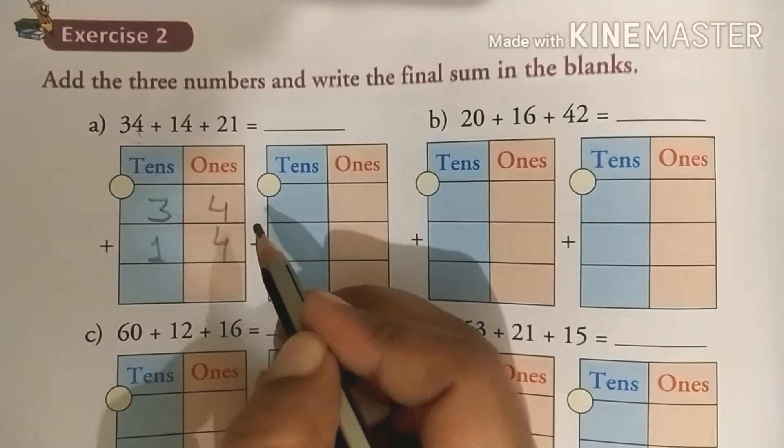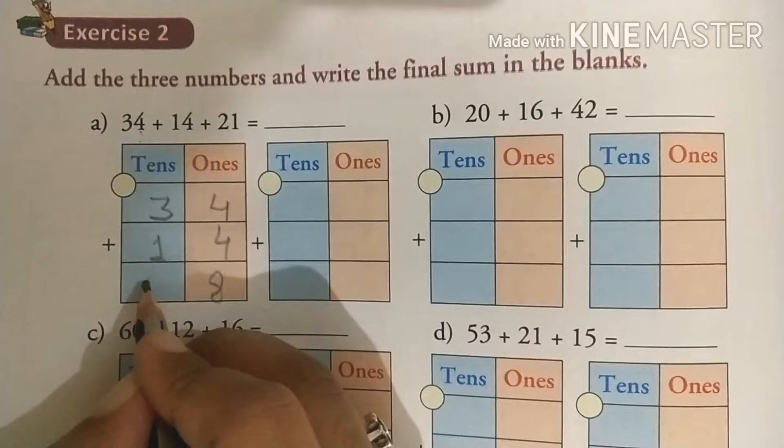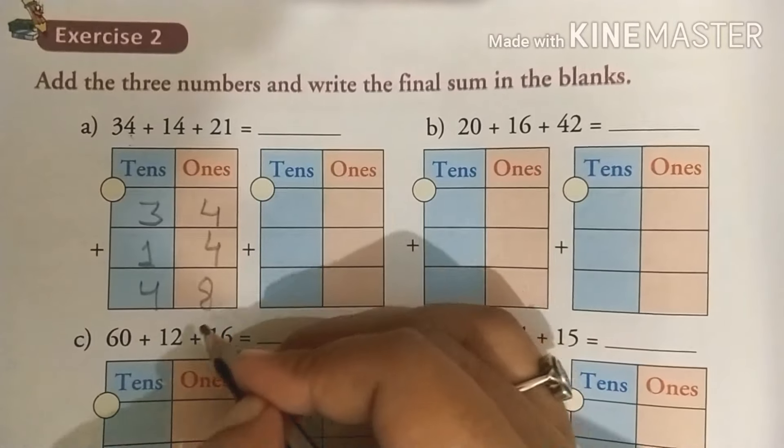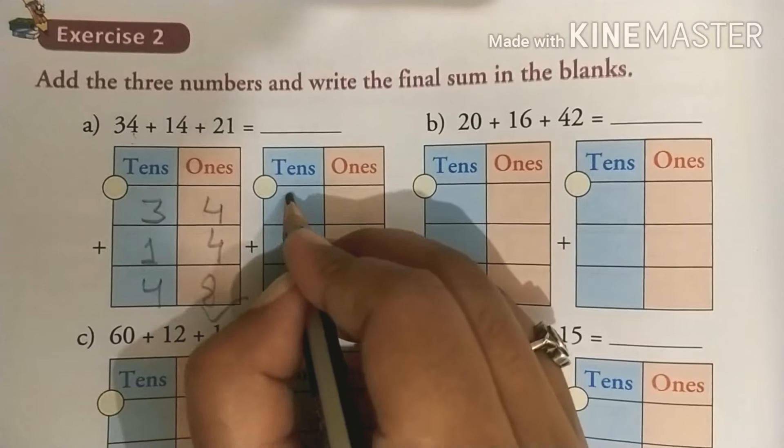Jab aap isko add karoge, when you will add it, 4 plus 4 is 8, 3 plus 1 is 4. Then this 48 will come to this place, yeh haan pe aajayega aapka 48.